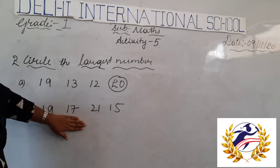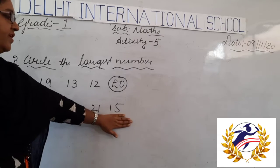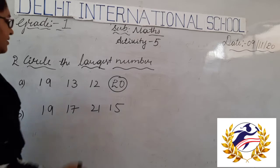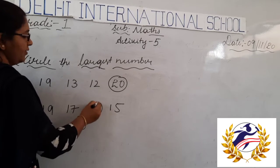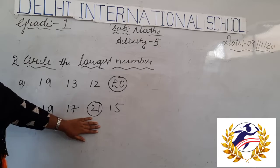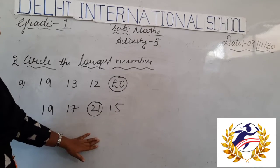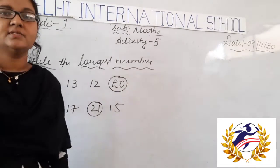Next, the numbers are 19, 17, 21, and 15. Which number is bigger here? That is 21. So we circle the largest number among these numbers.